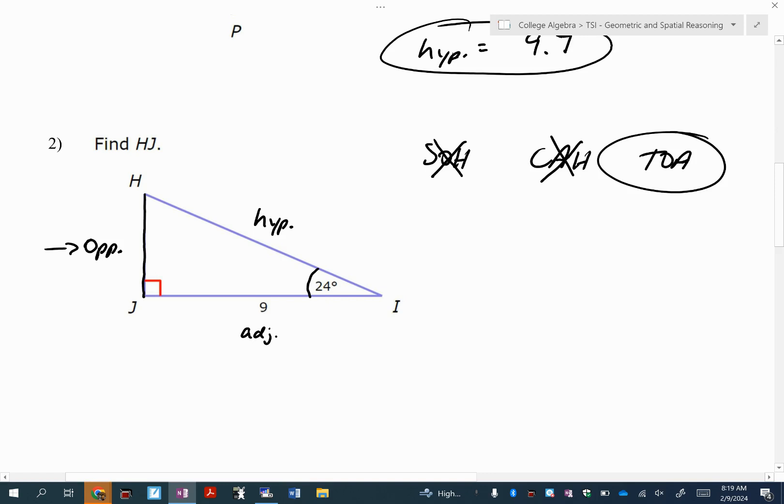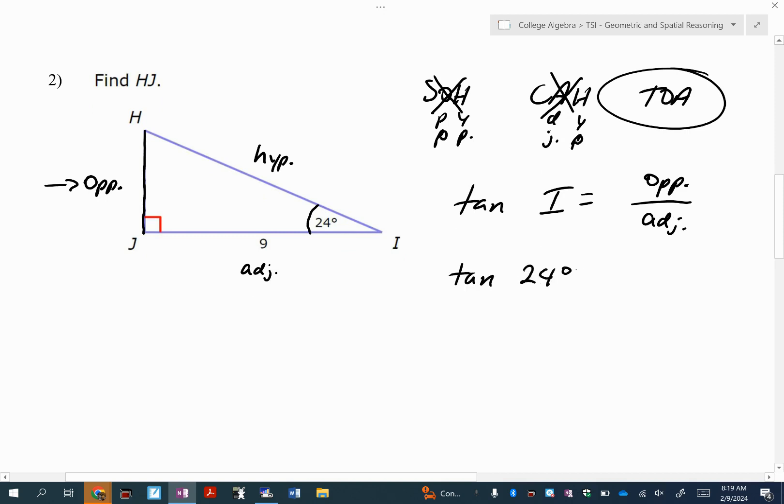So tangent of angle I equals opposite over adjacent. So tangent of 24 degrees equals the opposite over nine. Now if you wanted to, I know I haven't done this yet on these problems, but if you wanted to you could replace where I put OPP for the opposite, you could replace this with the side length HJ. Those are the same thing. So it's up to you when you're doing your work.